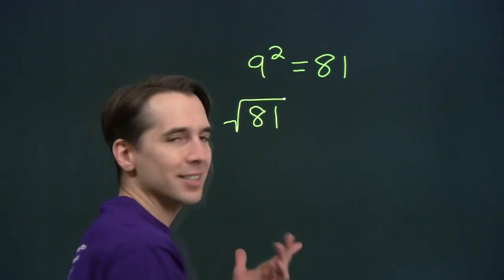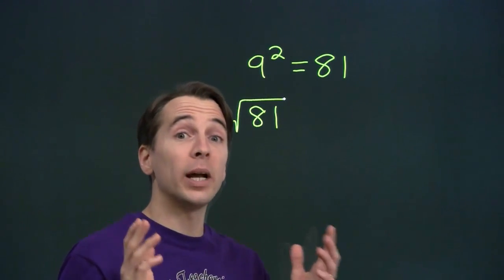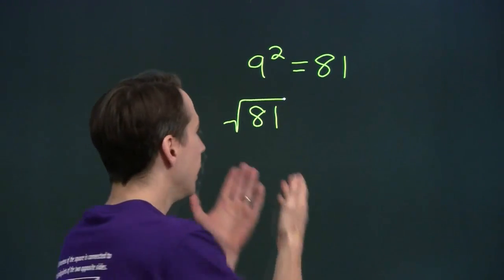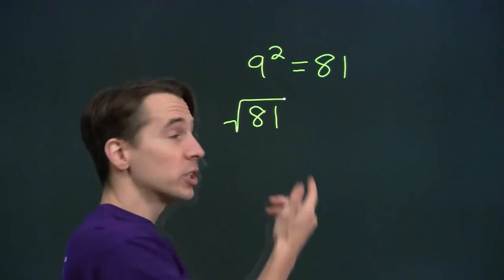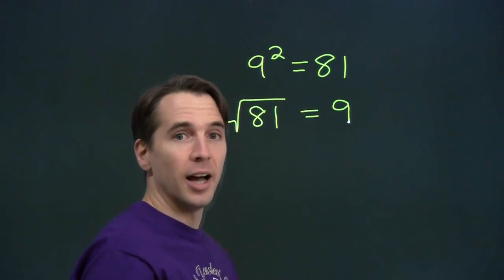We write it like this. That funny little symbol is called a radical. And this is the square root of 81. And it asks us, what number did we square to get 81? Of course, that's just 9.